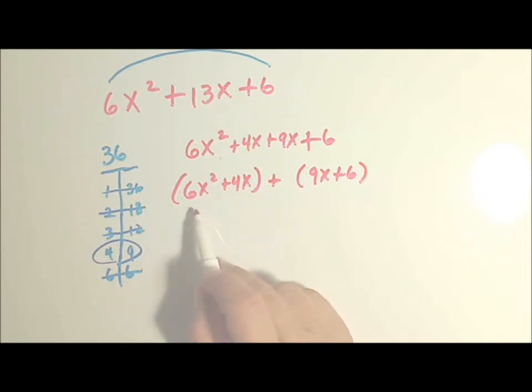Well, 4 and 6 are both divisible by 2. And there's an x in both of them. So I can factor out a 2x. 2 times what is 6? Well, that would be a 3. And x times x would be x squared, plus 2.